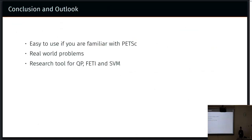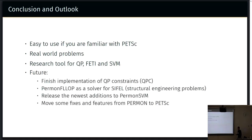What I'd like you to take from this is that if you are familiar with PETSc and have some QP problem that you want to solve, or want to use SVM, it should be very easy to use PERMON. In the future, we would like to finish an implementation of something we call QP constraints, which would allow using conic constraints and similar things. Thank you for your attention, and if you have any questions.